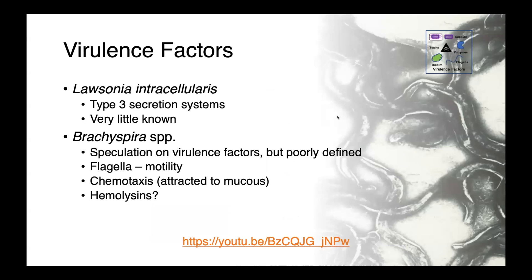When it comes to virulence factors, we really don't know a lot about Lausonia intracellularis — it produces type 3 secretion systems, but other than that, very little is known. Brachyspira virulence factors are really poorly defined, and we lack experimental evidence documenting their role in disease. These are motile organisms with flagella; they're chemotactic and seem to be attracted to mucus. Hemolysins have long been speculated to be involved in virulence. A linked video shows Brachyspira moving on a live wet mount, demonstrating its snake-like motility.